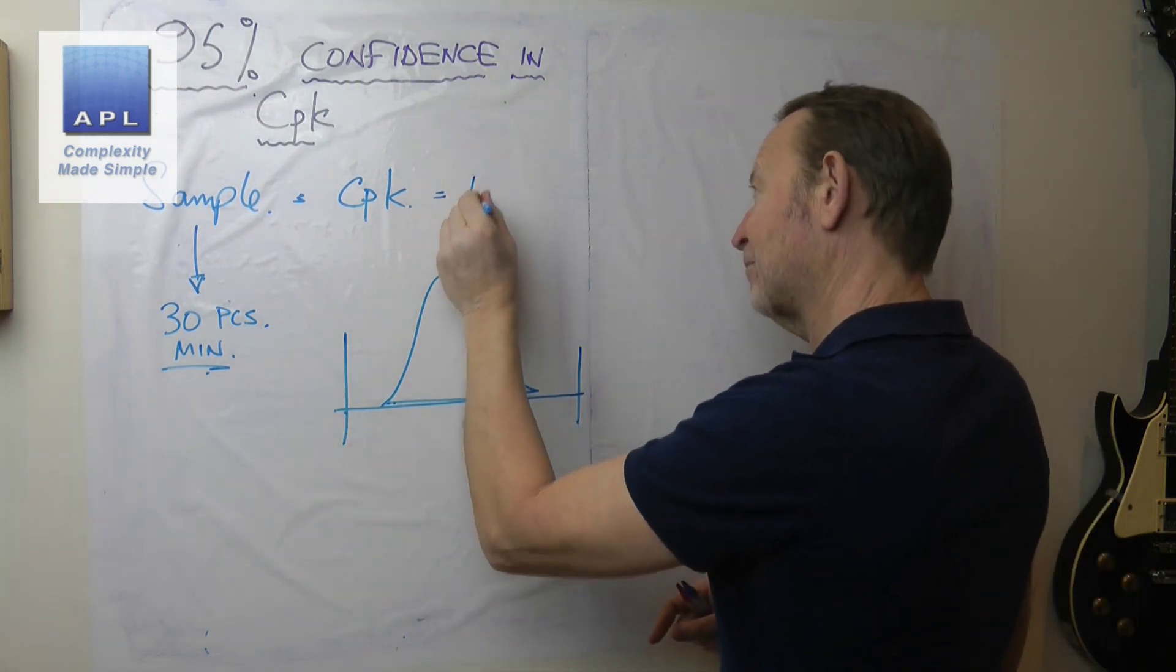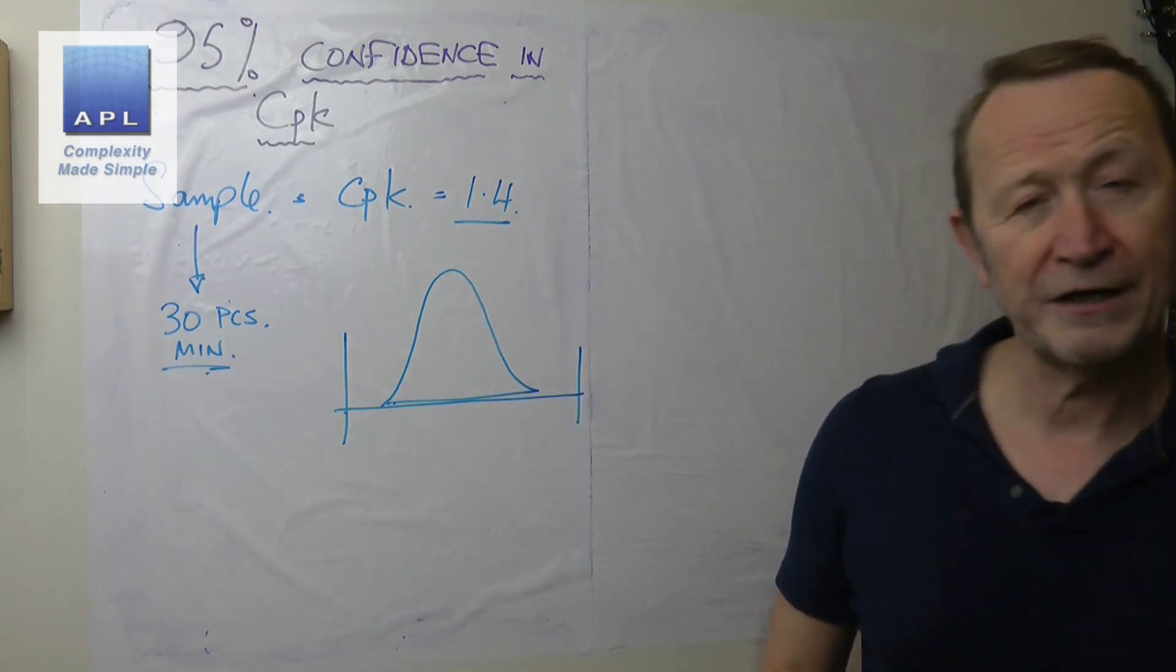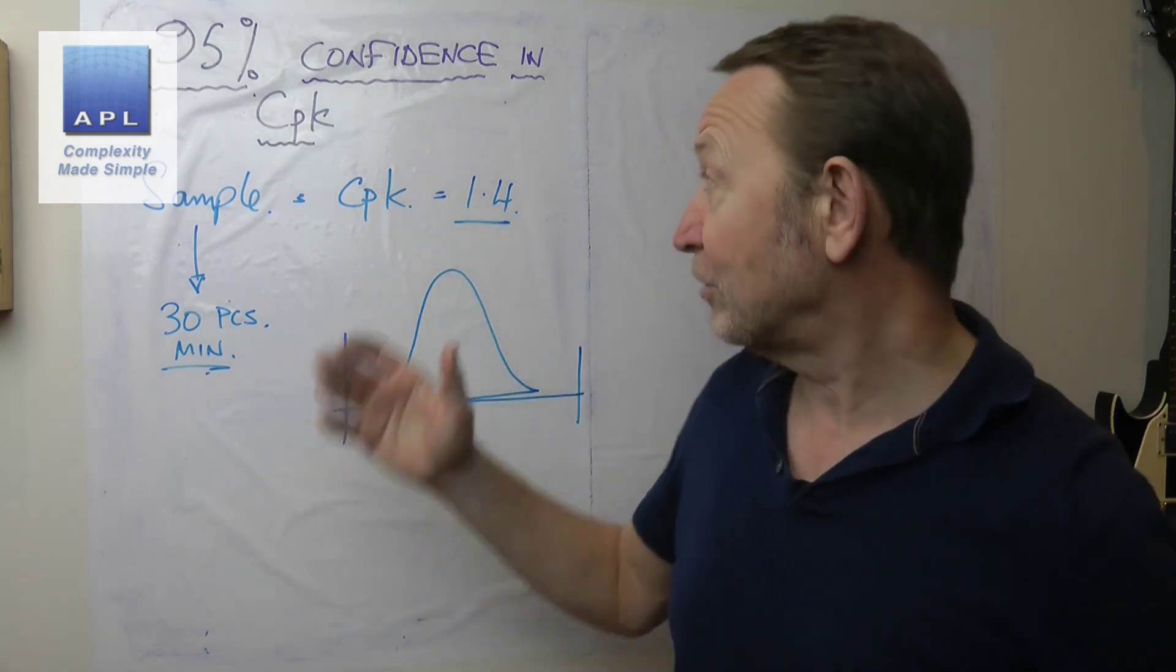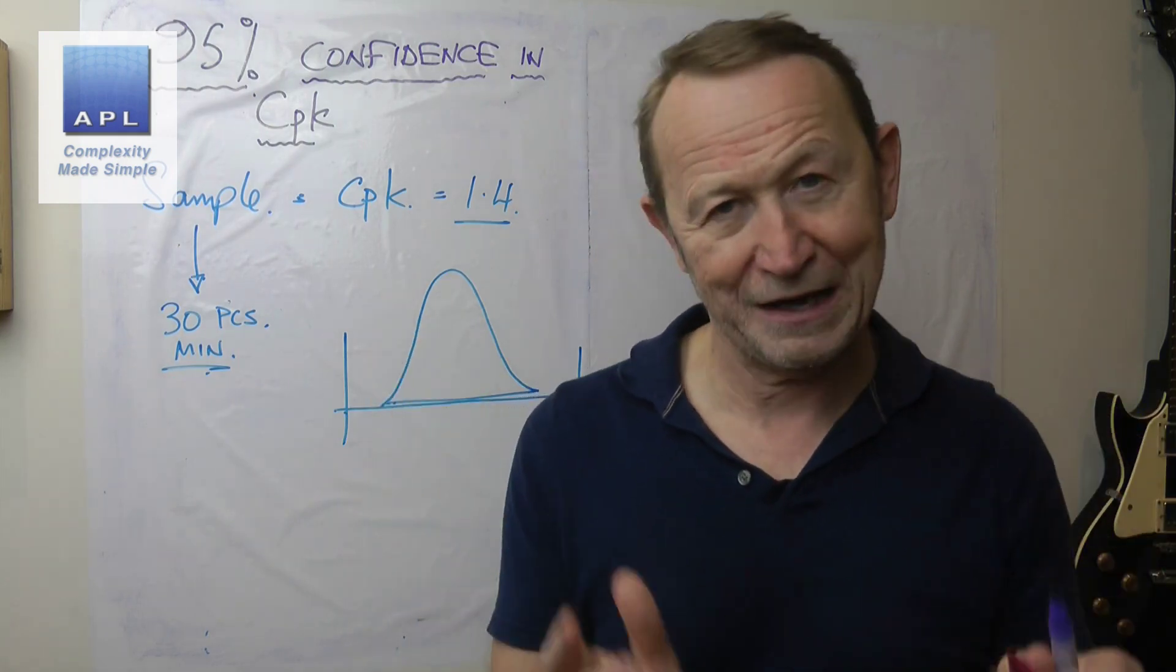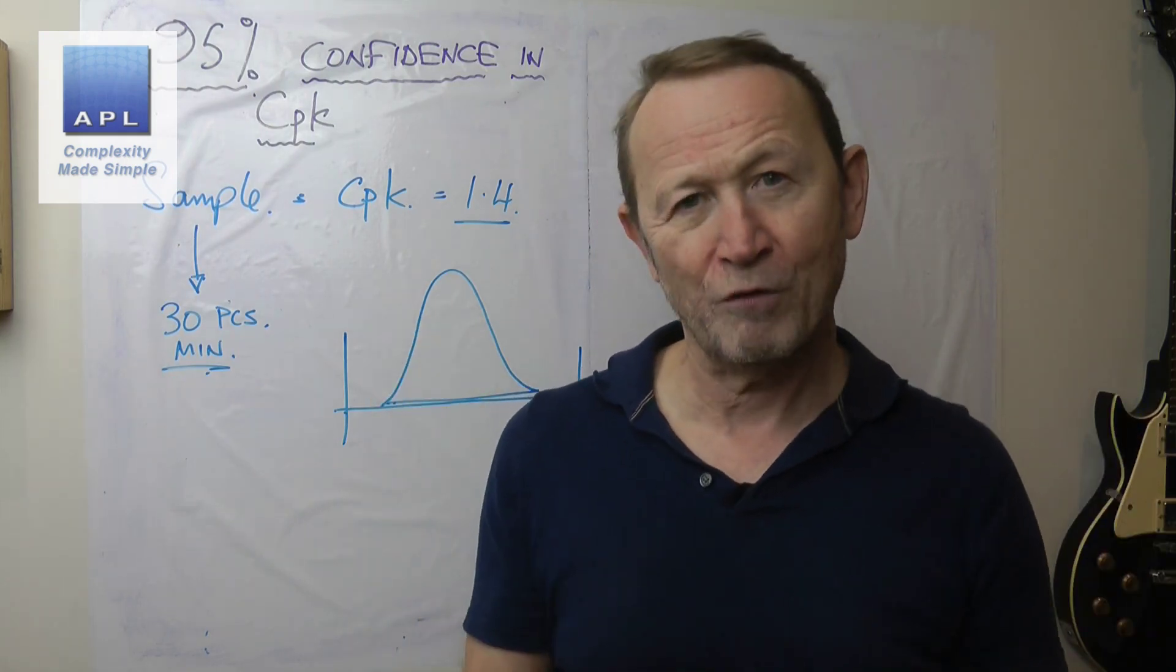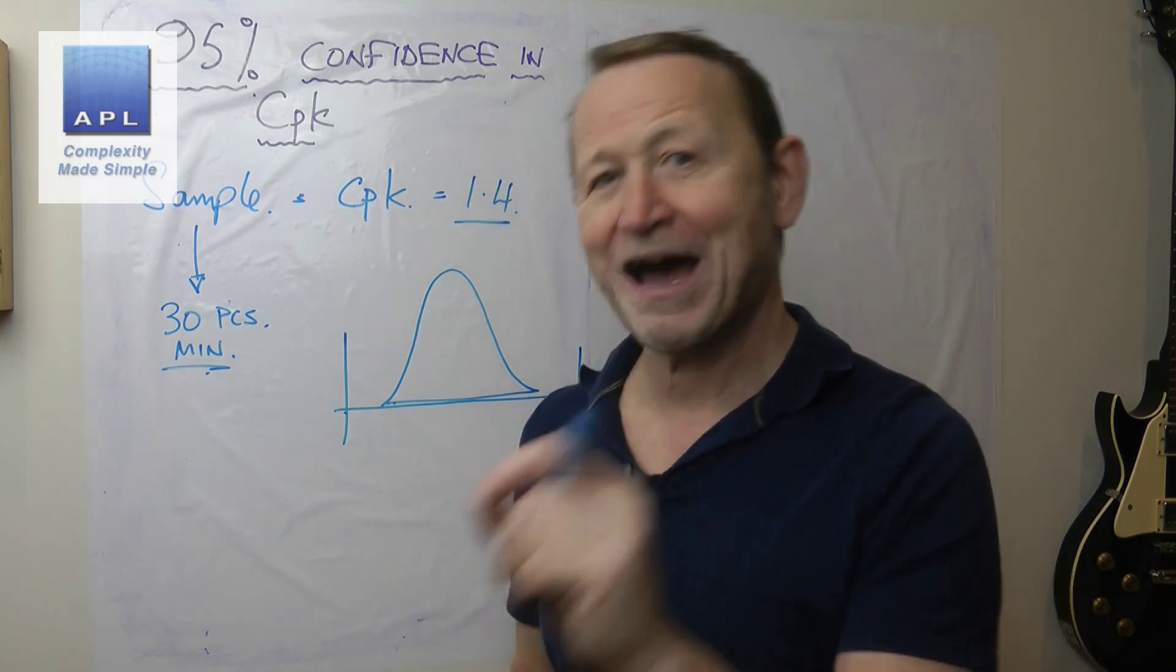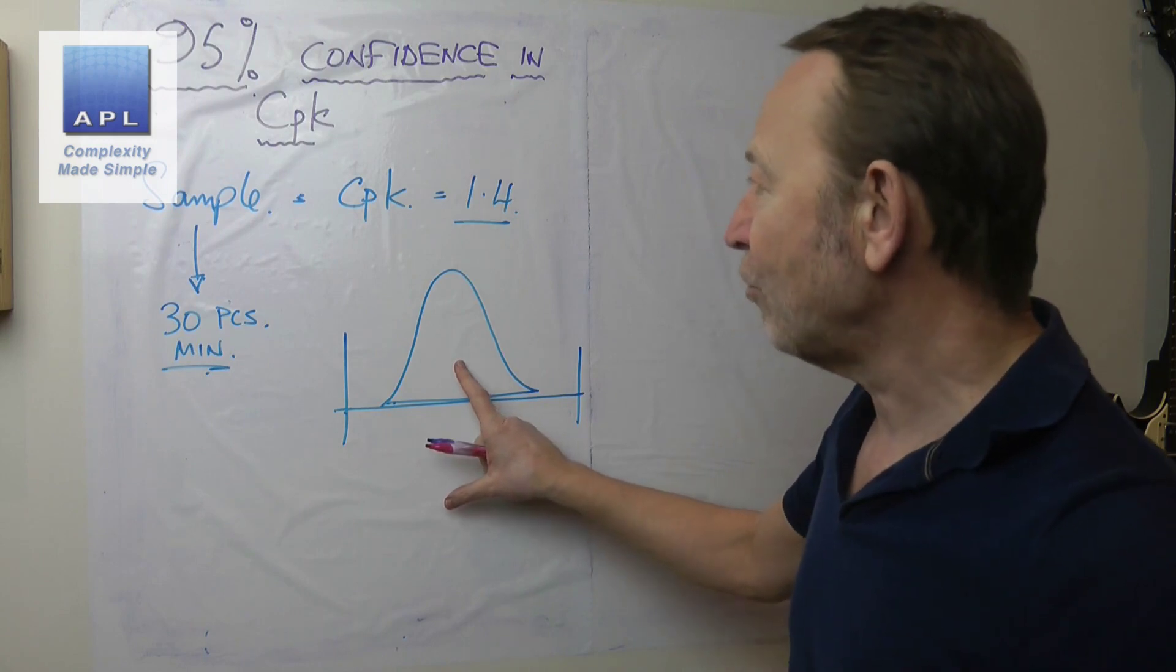I'm going to back the CPK as quite good, so let's say it's a CPK of about 1.4. Let's say I want 95% confidence in that value. Actually, it doesn't have to be 1.4; this could be any CPK level that you want to transform and say I've got 95% confidence that it's that as a minimum.